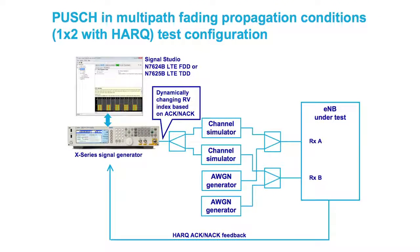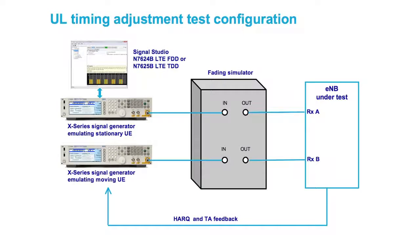Two of the most challenging test requirements are defined under the Performance Requirements Test: these are the Hybrid Automatic Repeat Request, or HARQ, feedback, and Uplink Timing Adjustments, where the eNodeB under test sends feedback to the test equipment, and the test equipment is required to dynamically configure uplink signals based on the HARQ and timing adjustment feedback it gets from the eNodeB.